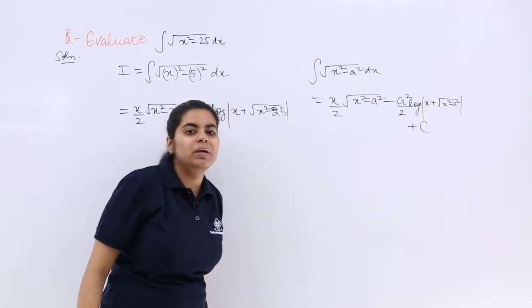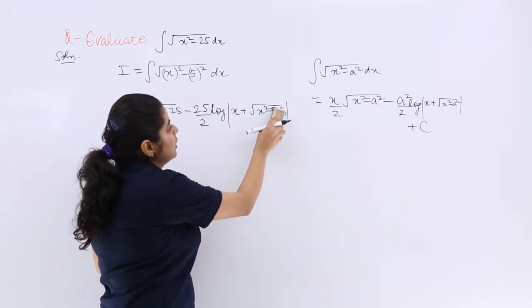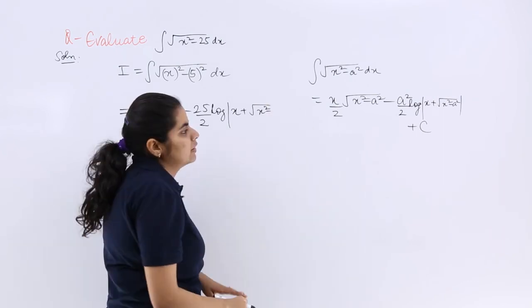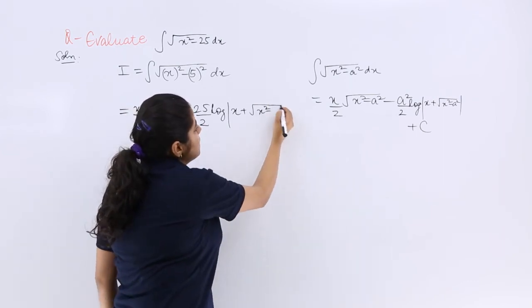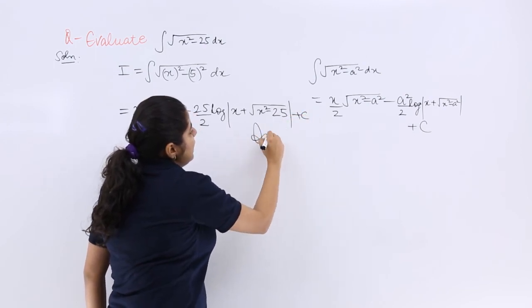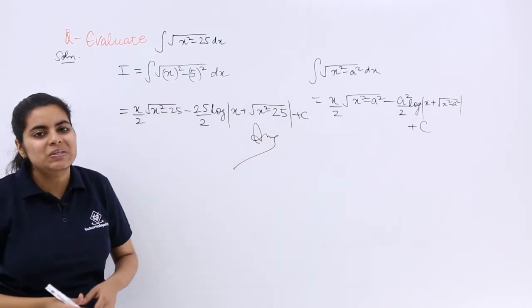Let me write it more clearly. It should be x square minus 25. There is some overwriting done over here. x square minus a square plus C. And that is the answer to this question.